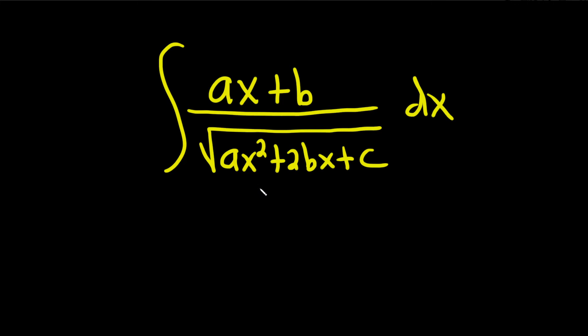So a good idea maybe is to start by letting u be what's inside this square root. So we'll let u be equal to ax squared plus 2bx plus c.